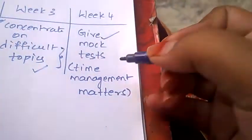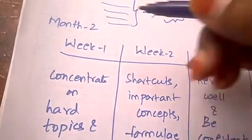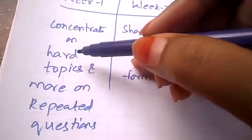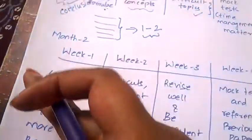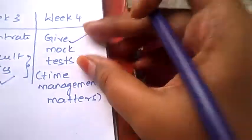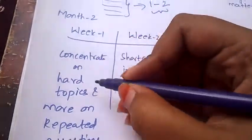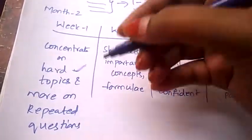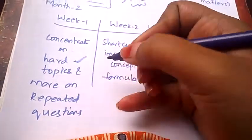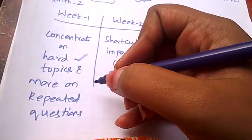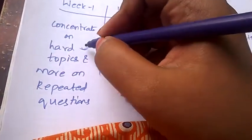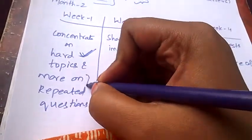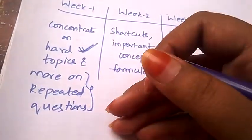Now let's see what things you need to do in Month 2. In Month 2 Week 1, you need to concentrate on the hard topics and most repeated questions. Just before this week, you gave the mock test and referred to previous papers, so you'll know what the hard topics are. From the mock tests, you will know what are the topics and questions which you are feeling hard, and you will also know what are the questions which are repeating regularly. So concentrate on these hard topics in Week 1, and concentrate also on the repeated questions so that even this year it may repeat.